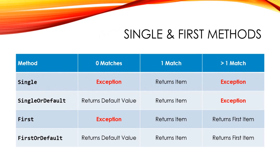I'm a really big fan of the Single and First methods that we looked at. Here's a chart that shows how the different methods behave. If we call Single: zero matches throws an exception, one match returns that item, more than one throws an exception. For SingleOrDefault: no items returns the default value (null for reference types or zero for value types), one match returns that item, more than one throws an exception. For First: no matches throws an exception, one item returns it, more than one returns the first one. And with FirstOrDefault, we won't get any exceptions at all — we'll either get the default value if it finds nothing, or the first item it comes to.